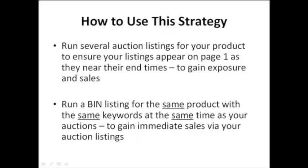The way to use this strategy is to run several auction listings for your product to ensure they appear on page one as they near their end times, giving them extra exposure and more sales. The trick is to run a Buy It Now listing at the same time as your auction listings for that product, using exactly the same keywords. This will gain you immediate sales via your auction listings because people will link through to your Buy It Now listing.